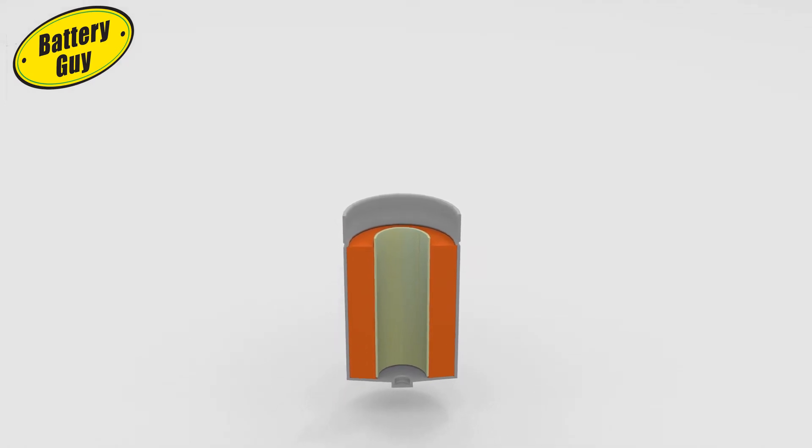Once the separator has absorbed the electrolyte, a seal is inserted into the case at the positive end to ensure the cathode is completely isolated from the hollow center of the battery.